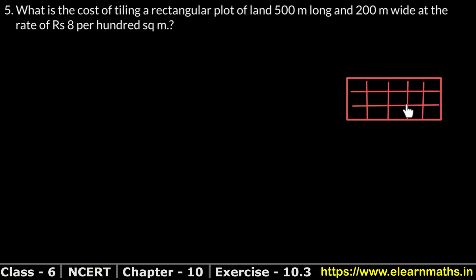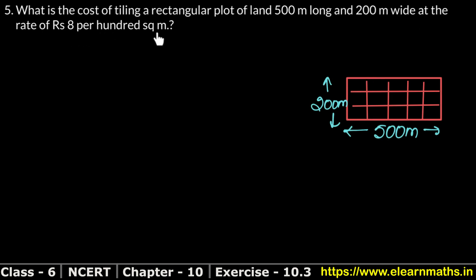In this rectangular plot of land, the length is 500 meters and the width is 200 meters. The cost of tiling is at the rate of Rs. 8 per 100 square meters. So per 100 square meters, the cost of tiling is Rs. 8.